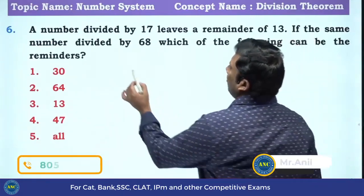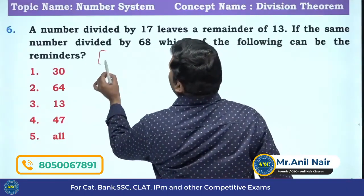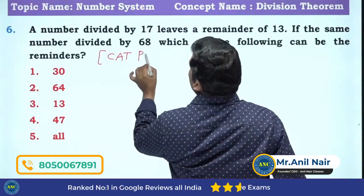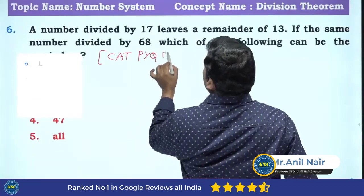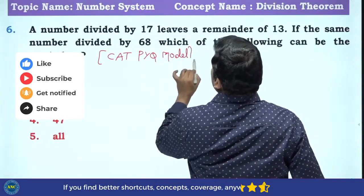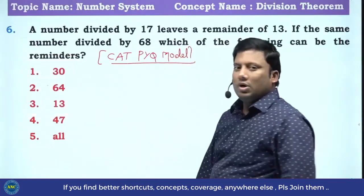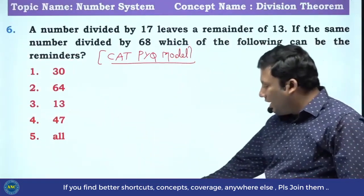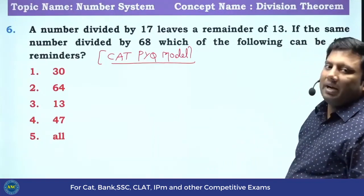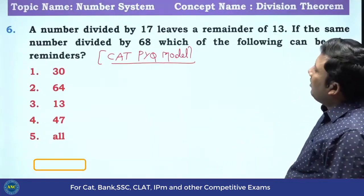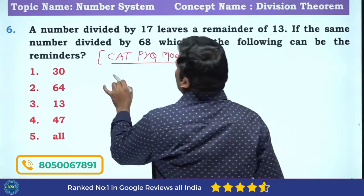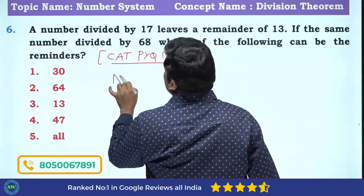CAT Previous Year Question model — PYQ stands for Previous Year Question. Read the question first. A number when divided by 17 leaves a remainder of 13.